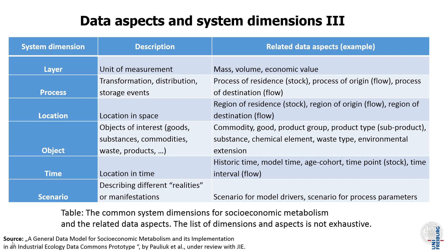Here is an overview of the common system dimensions and the data aspects that are commonly used. Another example worth stressing is time: it can be historic time for time series, model time for future scenarios, age cohorts, or a time point versus a time interval when measuring stocks or flows respectively. When looking at data, we always have to be clear what the different system dimensions exactly mean — what is the role of time, what is the role of location, whether it is origin or destination.